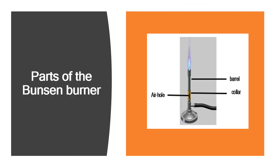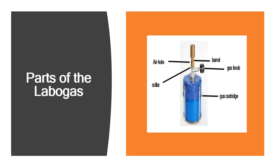These are the parts of the Bunsen burner. These are the parts of the labo gas. The parts include the air hole, collar, barrel, gas knob, and gas cartridge.